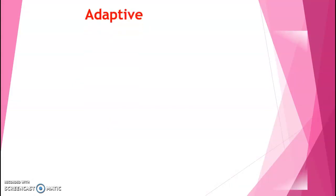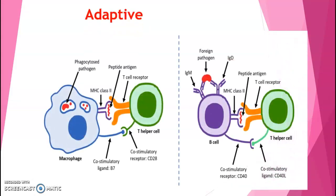Next is the adaptive immune response, which is the body's second line of defense. The cells of the adaptive immune system are extremely specific because during early developmental stages, the B and T cells develop antigen receptors that are specific to certain antigens. This is extremely important for B and T cell activation.